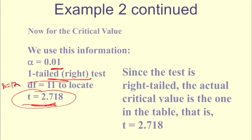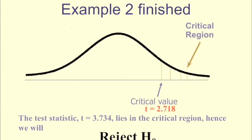Now, we had originally calculated a t-value of 3.734. That's going to be over here somewhere. This is in the critical region, because it's above our t-value that we found in the table of 2.718. So we reject the H-naught.